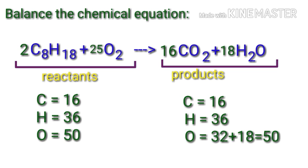The equation is now balanced. There are 16 carbon atoms, 36 hydrogen atoms, and 50 oxygen atoms on both sides.